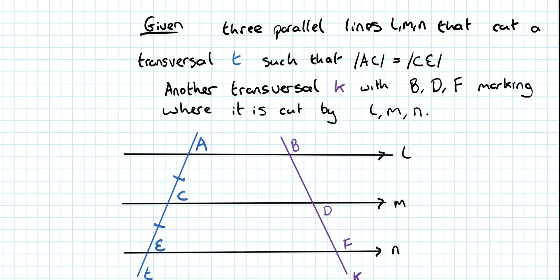We're given another transversal K, with B, D, and F being the points that are marked off, where it's cutting the lines L and M. And what we want to show, so we're given the fact that this section here is equal to this section here. That is, the length from A to C is equal to the length C to E. We want to be able to show that this section, B to D, is equal to D to F. So, that's what I want to actually prove.